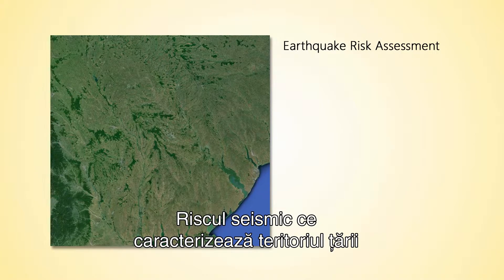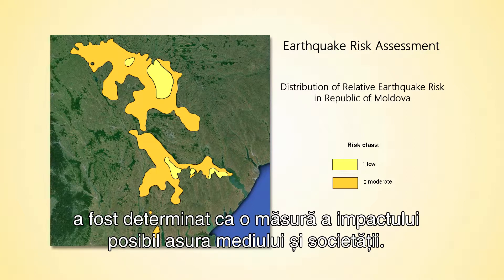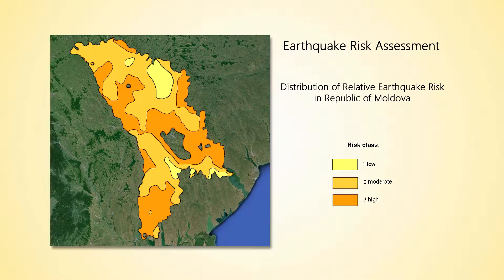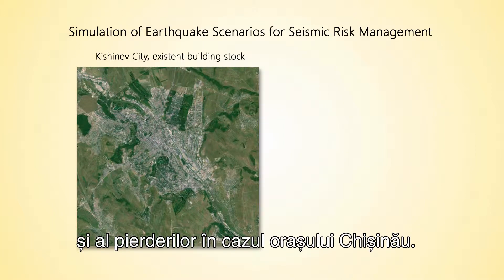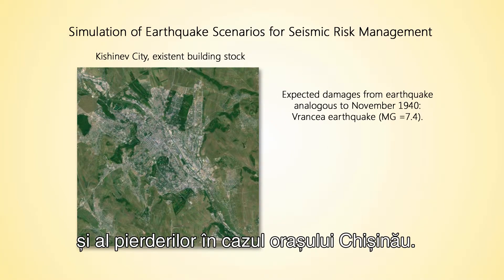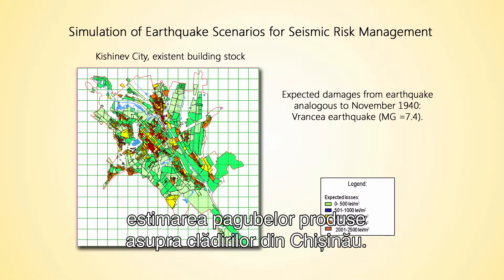Located in an active seismic zone, the relative earthquake risk for the area was determined as a measure of the potential impact on the physical environment and the exposed community. The aim of this study was to estimate the magnitude of damage and casualties expected in Kishinov City. To accomplish this, a simulation of earthquakes and damage to Kishinov City buildings was performed.